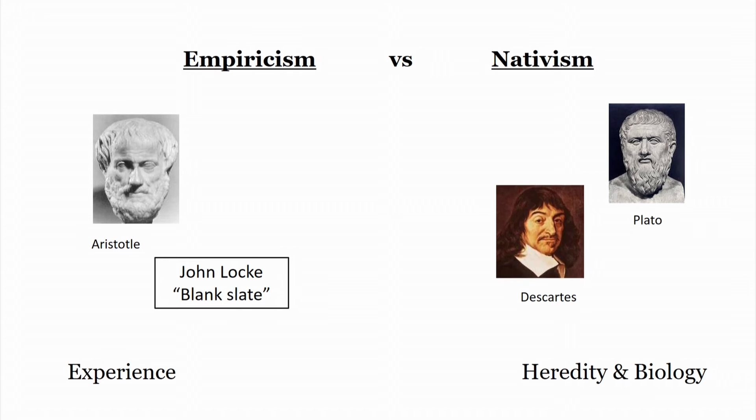What is this debate? Empiricism explains that knowledge — the idea of how knowledge gets stored — comes from individual experiences. Individuals, through their own interaction with people around them, with society, through memories or other experiencing systems, generate knowledge. Whereas nativists believe that the role of heredity, biology, or constitutional factors are responsible for the generation of knowledge.